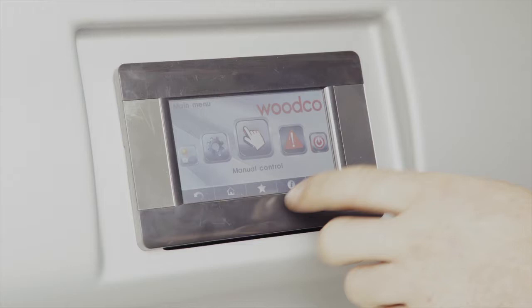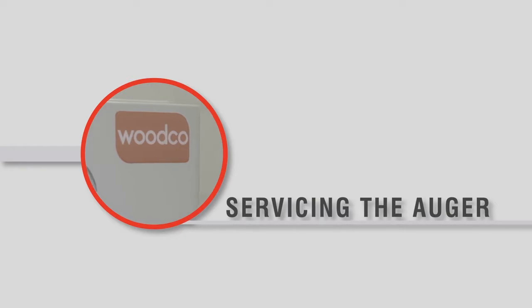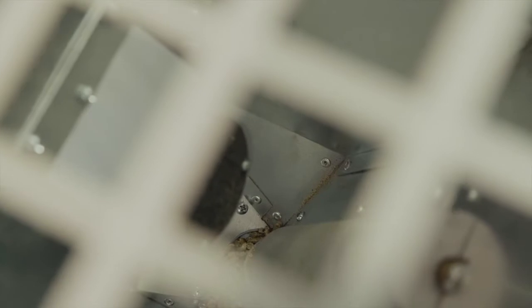The screen will then be accessible. Press the menu button and select manual mode. Scroll down using the arrow keys and select igniter. Almost immediately you should hear the igniter activating. Empty all the pellets from the hopper.